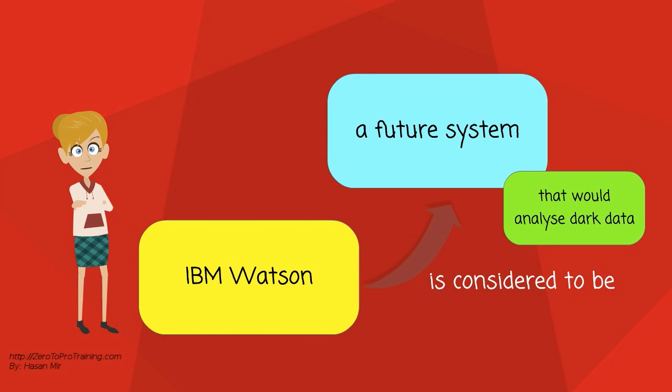For example, the IBM Watson is considered to be a future system that would be able to analyze this unstructured data and be able to produce meaningful results. That will utilize a lot of dark data that it is either practically impossible or very difficult to process at present.